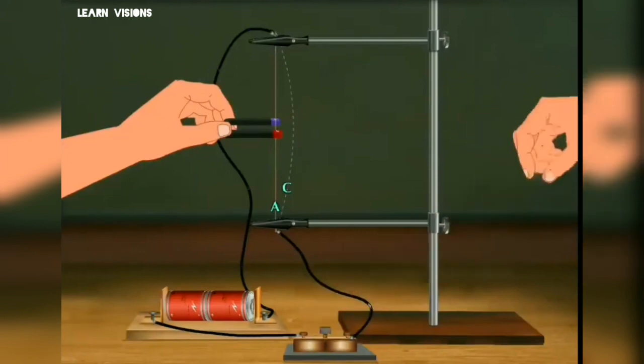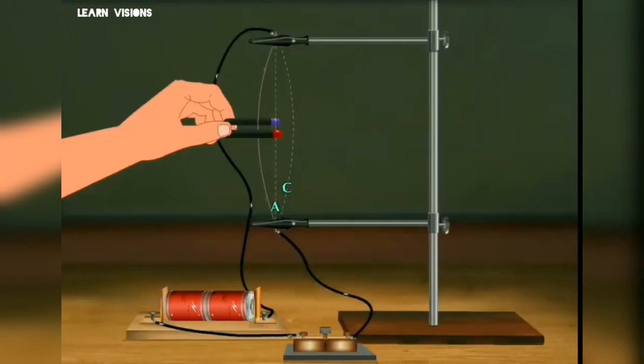After changing the direction of current the wire bends but in the opposite side of point C. Let's mark this point as point B. The force acts on the wire at the opposite side this time.